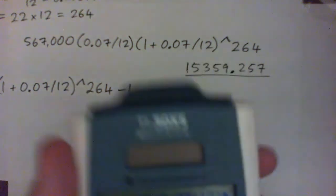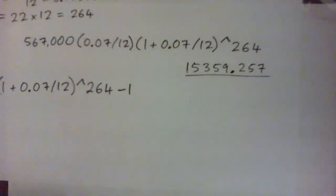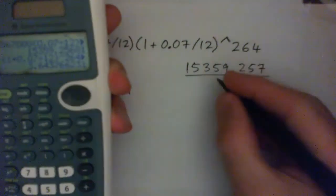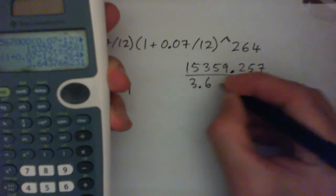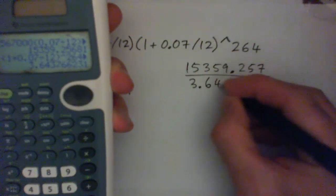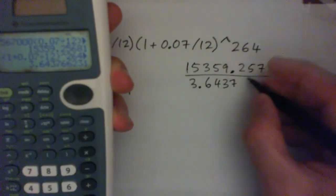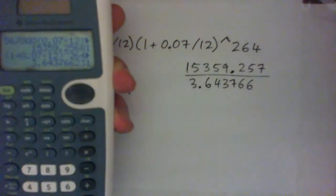And actually, in my calculator, what I could do... I'll just write that out anyway. But I should get 3.643766. So you can type that in, divide it, it'll be fine.